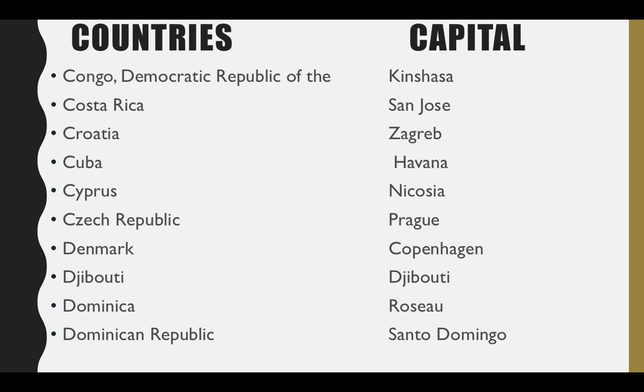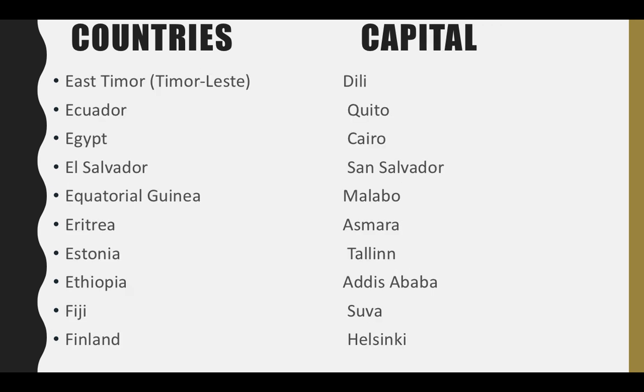Then we have Denmark — its capital is Copenhagen. Next is Djibouti — its capital is Djibouti. Next is Dominica — its capital is Roseau. Dominican Republic — its capital is Santo Domingo. Next is East Timor, that is Timor-Leste — its capital is Dili. Ecuador — its capital is Quito.